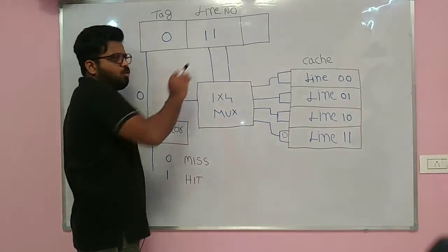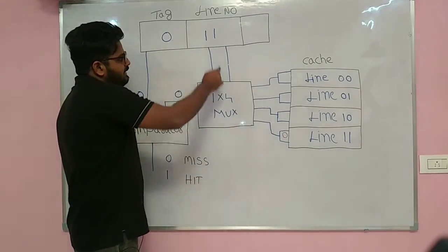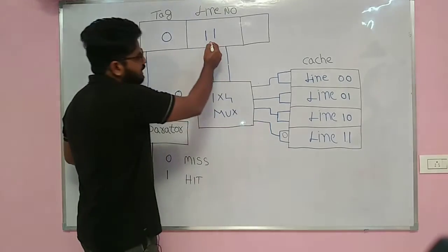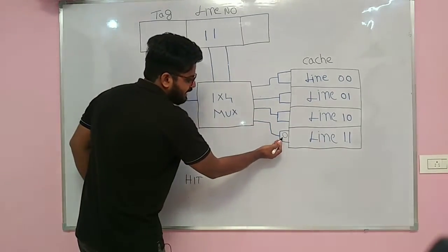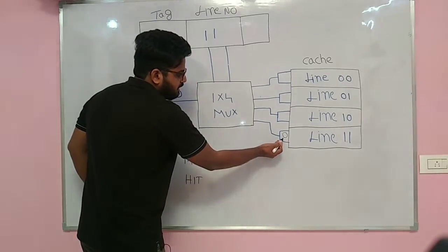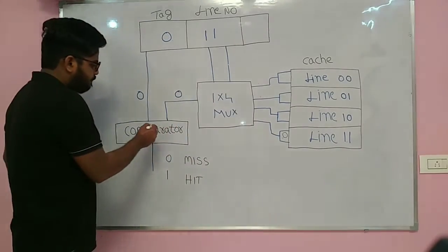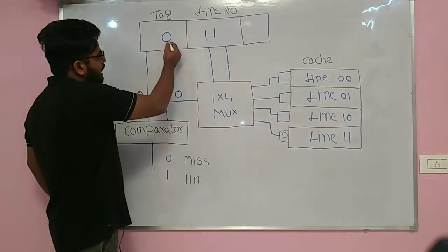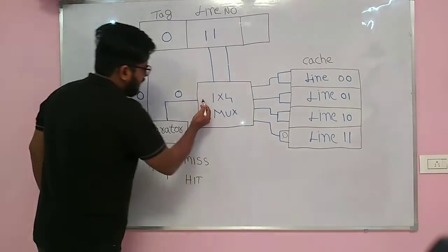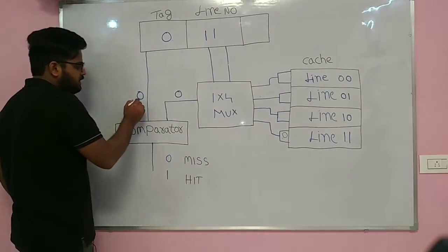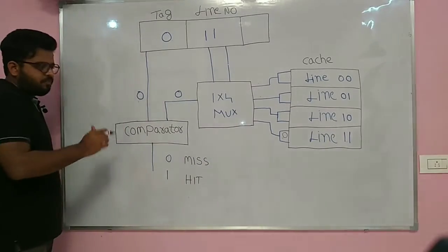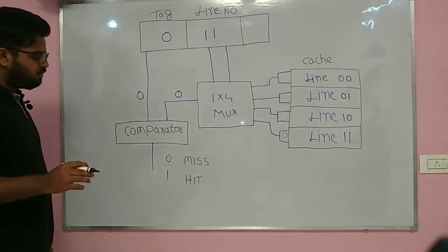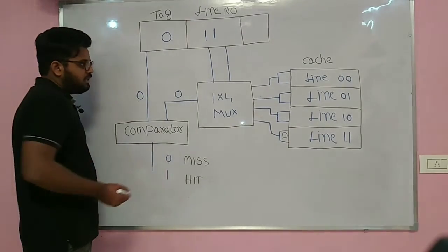We give line number 3 to the mux. Mux takes 3 and checks — this is line 0, line 1, line 2, line 3. It goes to line number 3 and gets the element there. Mux gets this element and submits it to the comparator. Now we compare the tag bit: we have 0 bit and 0 bit. The comparator says if they are the same it gives 1 (cache hit), if not same it gives 0 (cache miss). They are same, so it gives 1 — there is a cache hit.